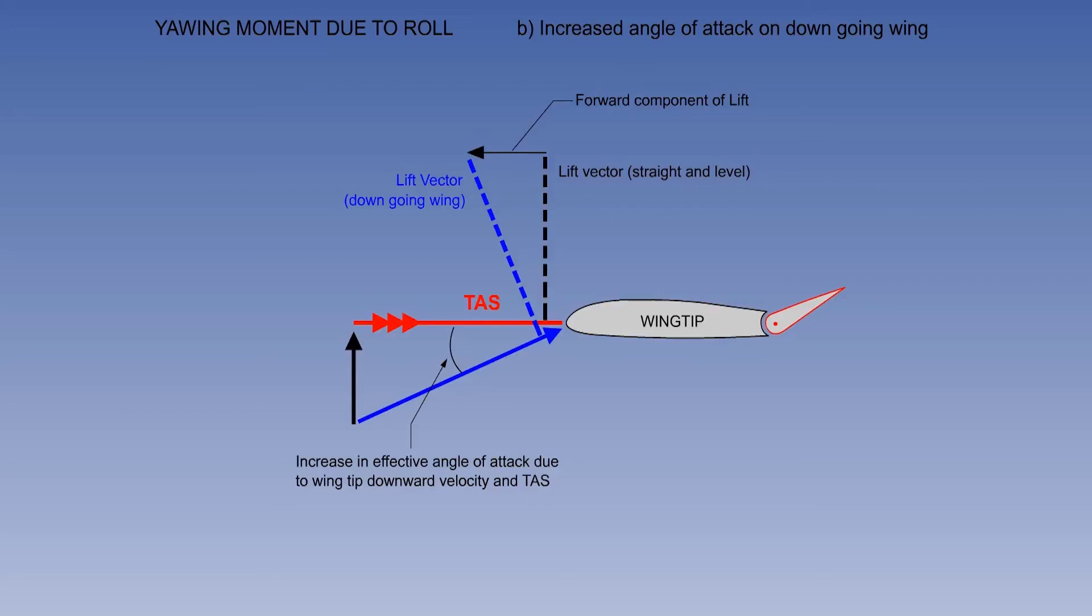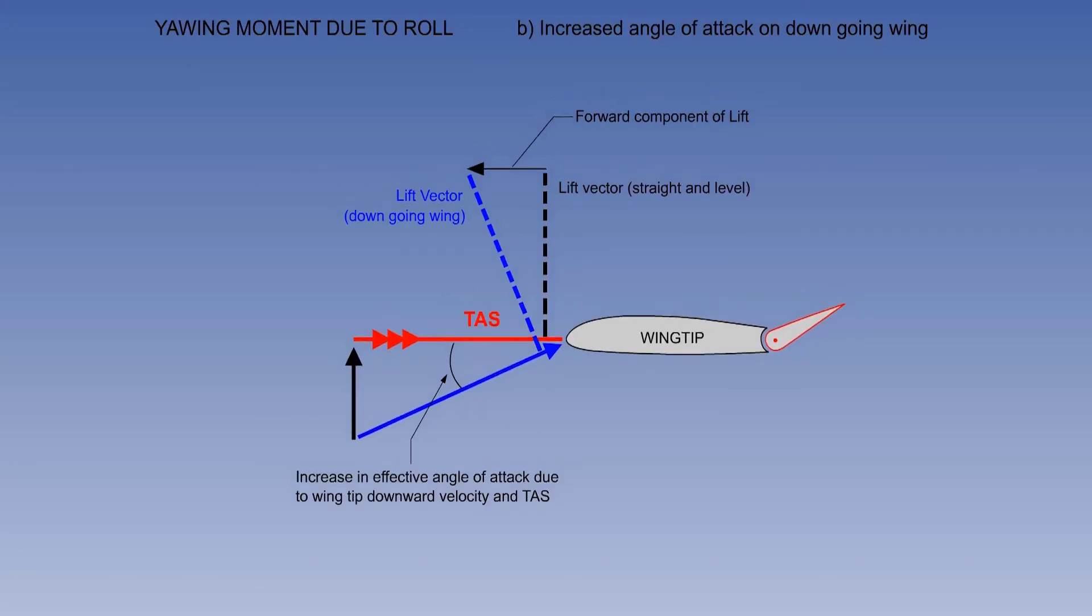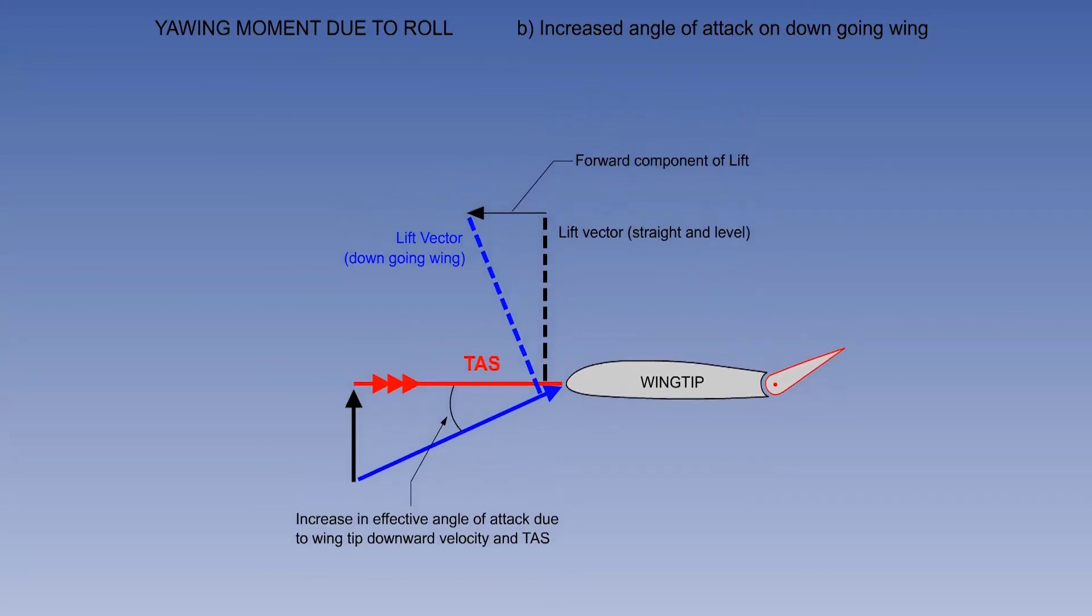You can see that the lift vector acts at 90 degrees to the effective airflow, giving a forward component of lift on the down-going wing. Thus the yawing moment from the roll is increased.